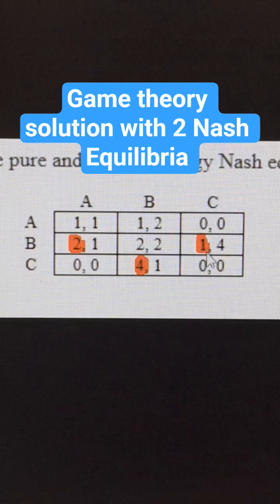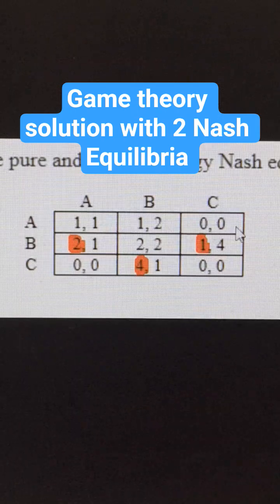Player 2 goes C, best for player 1 goes B. This means that A for player 1 is a dominated strategy.